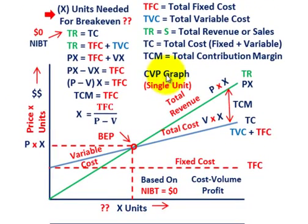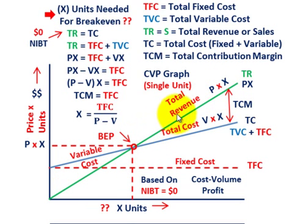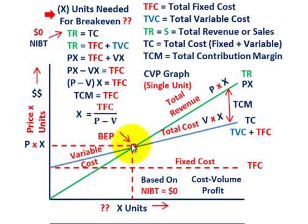Starting with our cost volume profit graph: along the x-axis are the number of units the company has to sell — that's X, the quantity. Along the y-axis are dollars — revenues and costs. We have two lines: our total revenues line, represented by the unit sales price times the number of units sold, and the break-even point is determined where total revenues and total costs intersect.